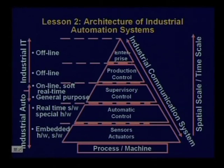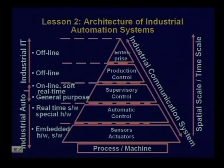Then finally enterprise control covering finance, business, HRD, and marketing. We said that for today's modern efficient factories all these levels have to be integrated and must continuously exchange information from the field and decisions from various parts in both directions, enabled by some sort of industrial communication system. In this course we are mainly going to concentrate on levels 0 and 1 — primarily industrial automation — while the higher layers are more in the realm of industrial information technology.